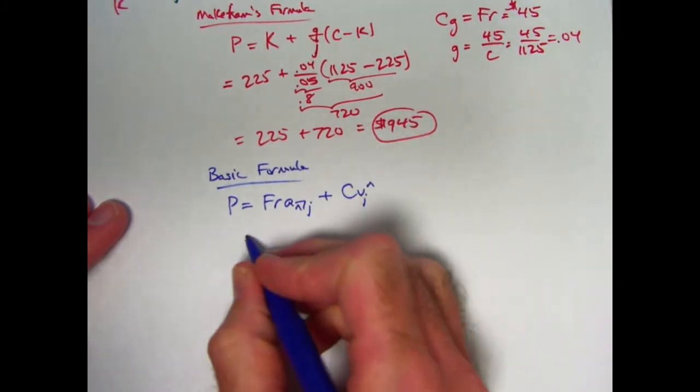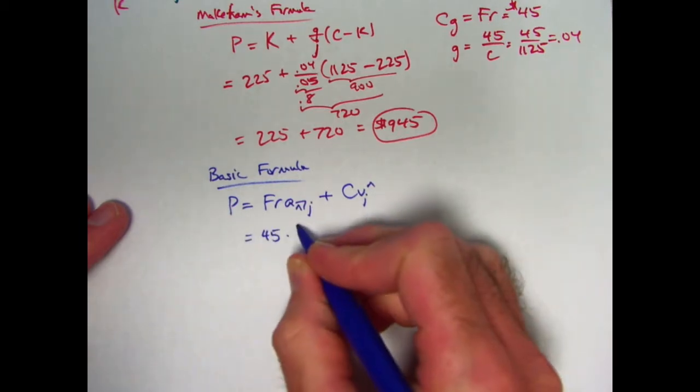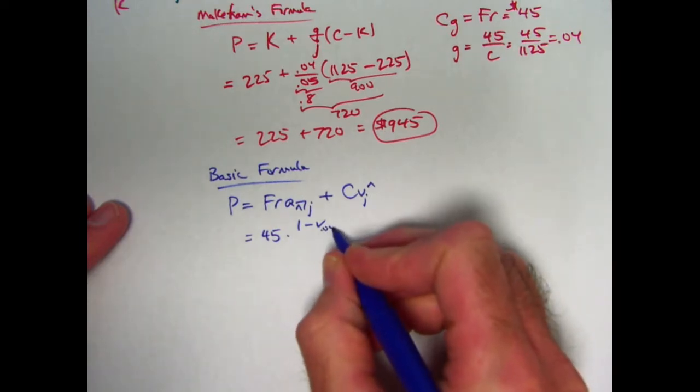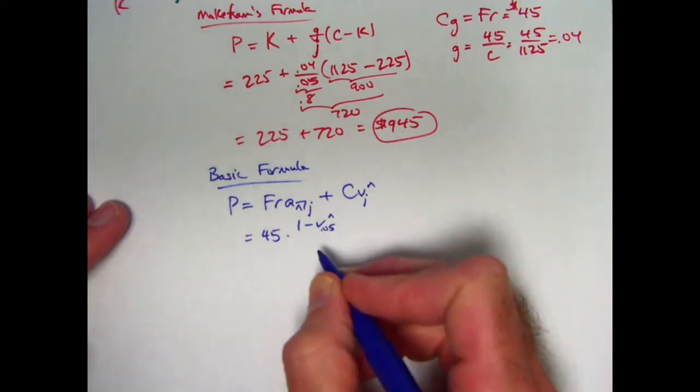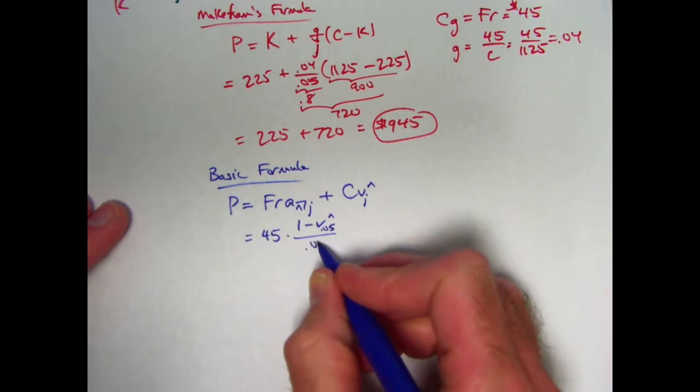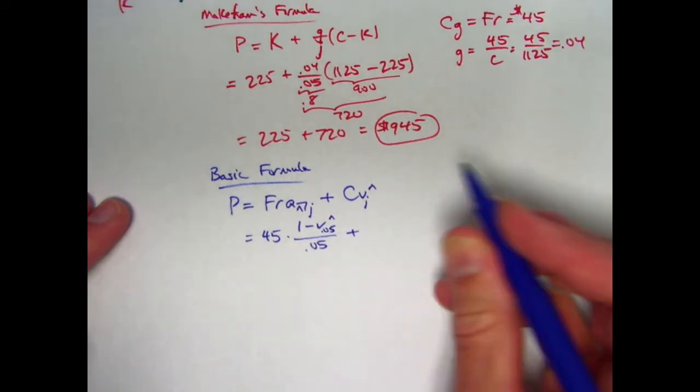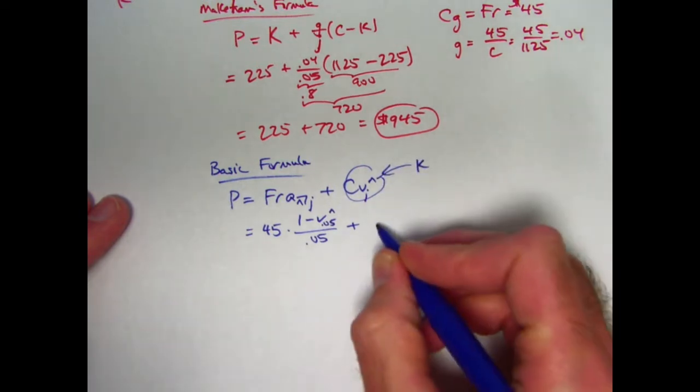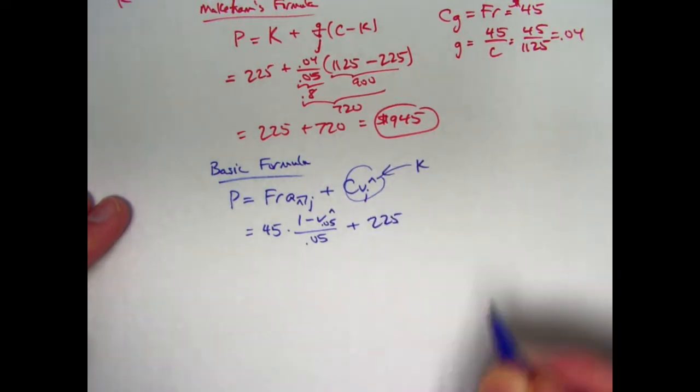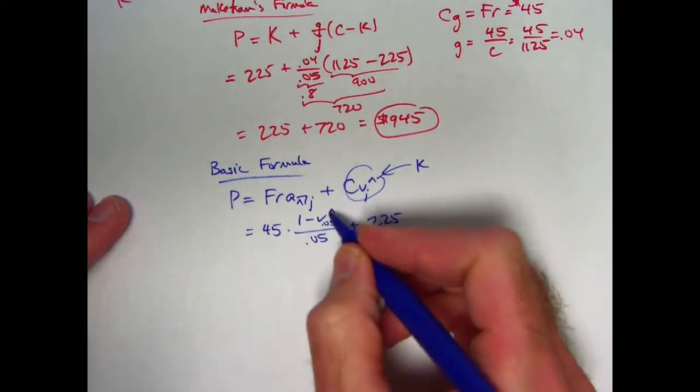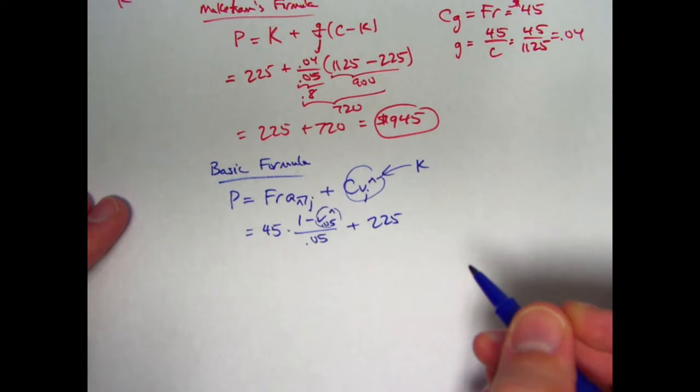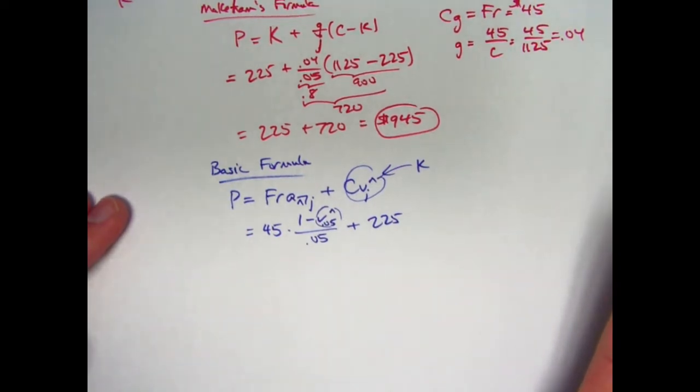Are we going to need to solve for n? We actually can avoid solving for n, but it still is going to be a little bit more complicated than Makeham's formula. F times R was 45. So we get 45. We have 1 minus v to the n at j, which is 0.05. I can put that in here if I like. So v at j to the n divided by j, which is 0.05 plus this thing. This is the value of k. So I can go ahead and replace this with 225 if I want. But I still am going to need to figure out either n or v to the n to help me finish this calculation.